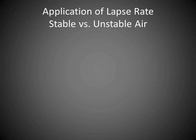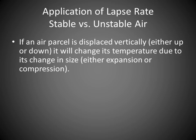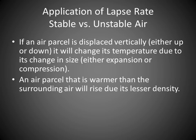Now we can apply the lapse rate to understanding whether air is stable or unstable. Stable air means weather conditions will be relatively uniform and you'll expect good weather. Unstable air is when you tend to have precipitation and bad weather. If an air parcel is displaced vertically, it changes temperature due to expansion or compression. A parcel warmer than the surrounding air will rise due to its lesser density.